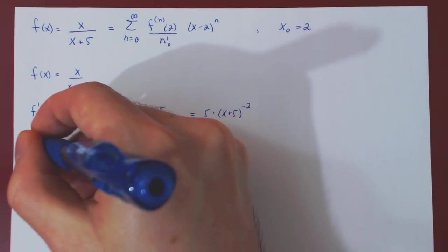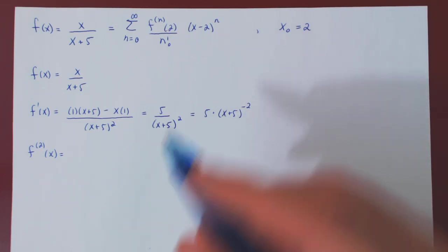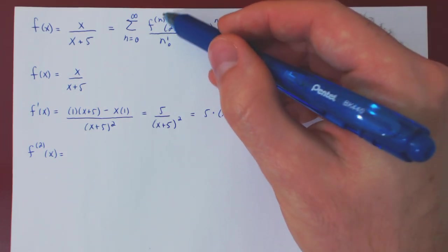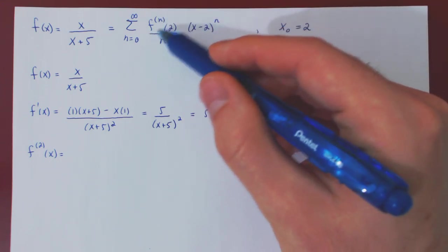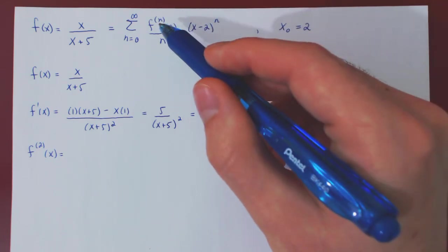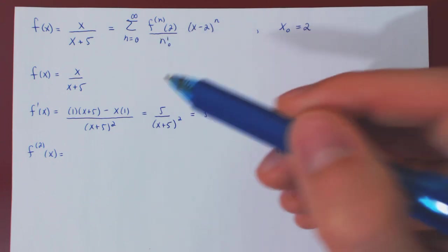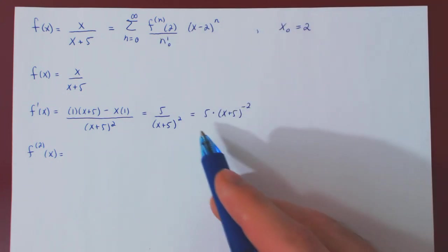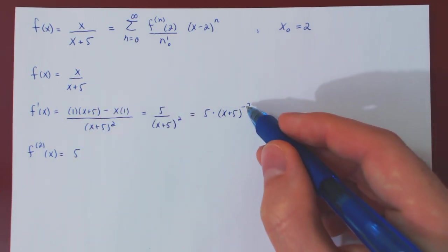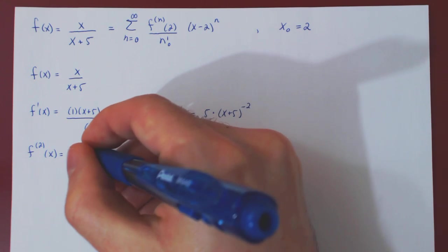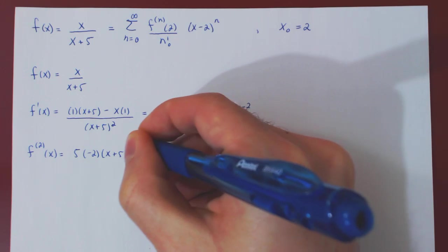Let's find the second derivative. The key in trying to find the Taylor series centered at 2 is that we need to find a pattern for higher derivatives. When you find higher derivatives, do not simplify — if you do simplify, you may lose the pattern. So the 5 is a constant multiple, it stays there, times negative 2 from the power rule, times x plus 5 to the negative 3.